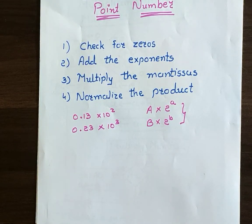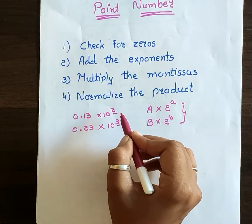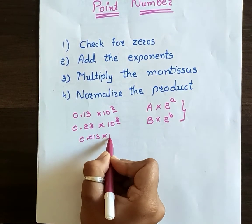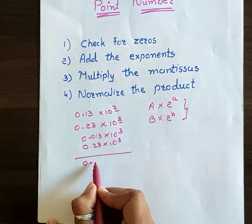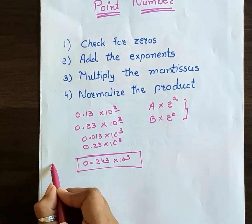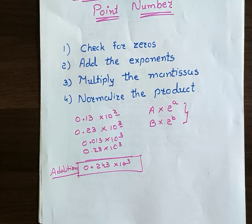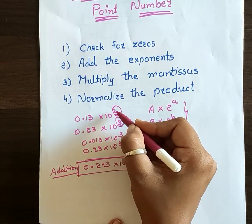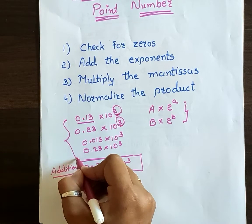Now if I want to perform the addition of these two numbers, I have to align the exponent. If both exponents are the same, I convert to 0.013 into 10 cubed and 0.23 into 10 cubed, so I can add them to get 0.243 into 10 cubed. In floating point addition, which we already covered in the previous lecture, we compare the exponents, choose one, and align the mantissa.